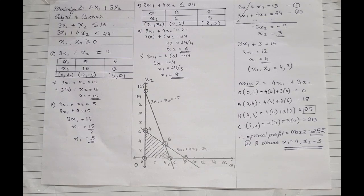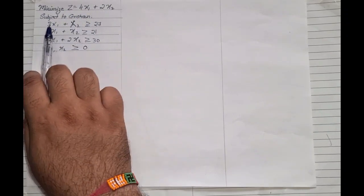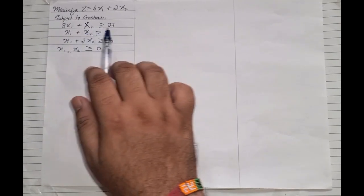That is how you solve the maximization sum graphically — the inner portion gets shaded for maximization. Now we will take up a sum based on minimization under the graphical method. The solving process is exactly the same, but notice this problem has three constraint equations.